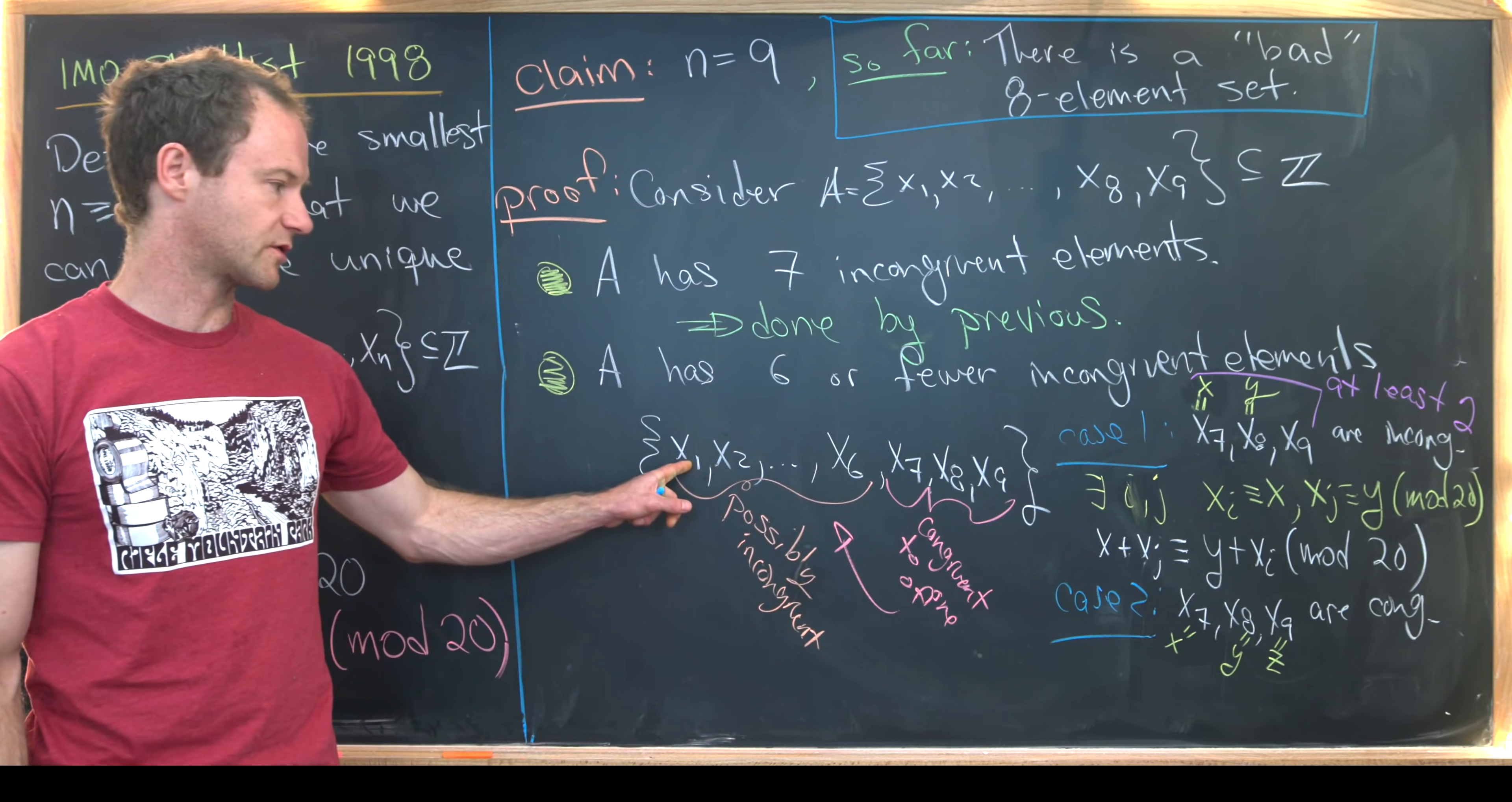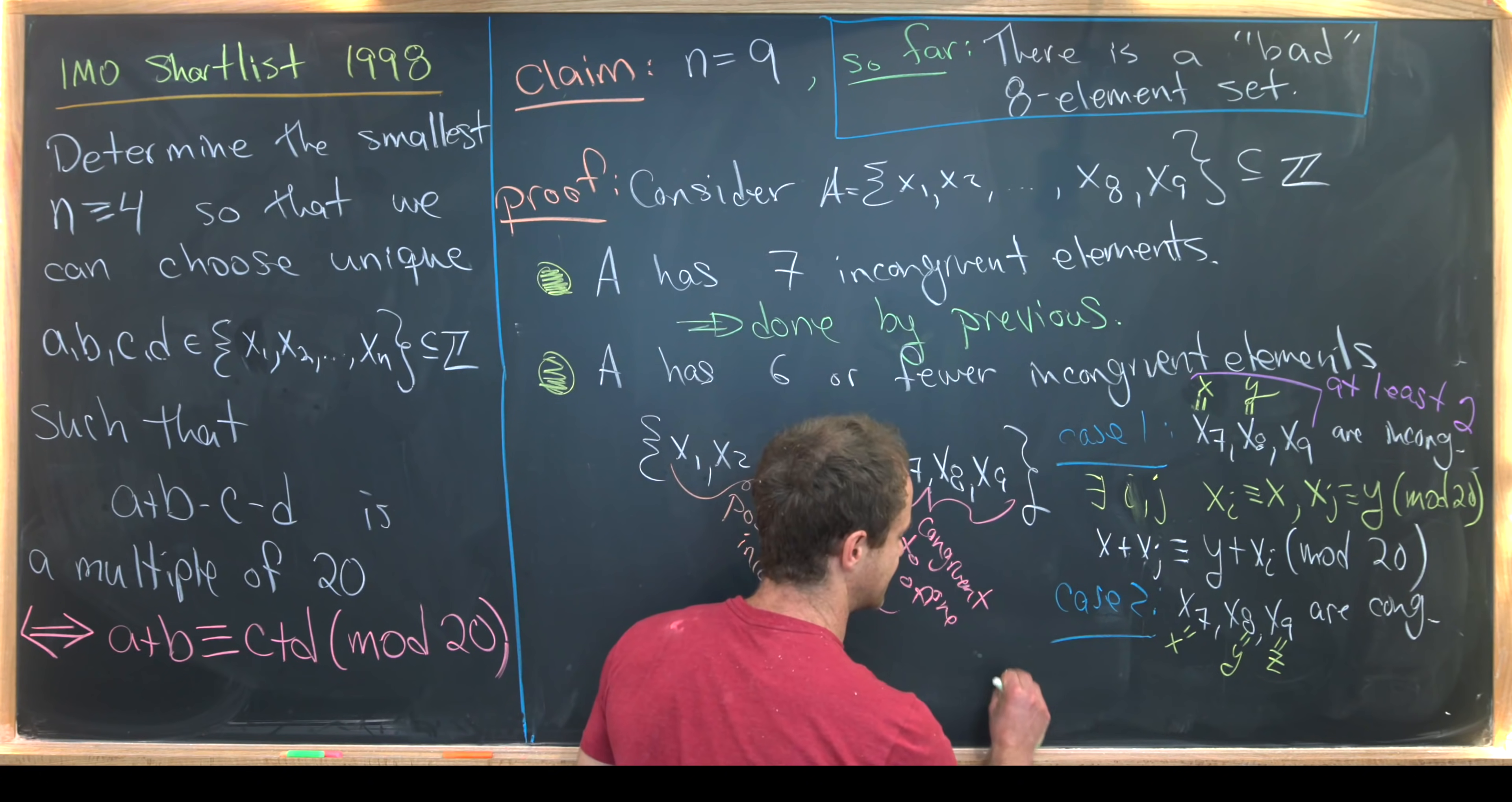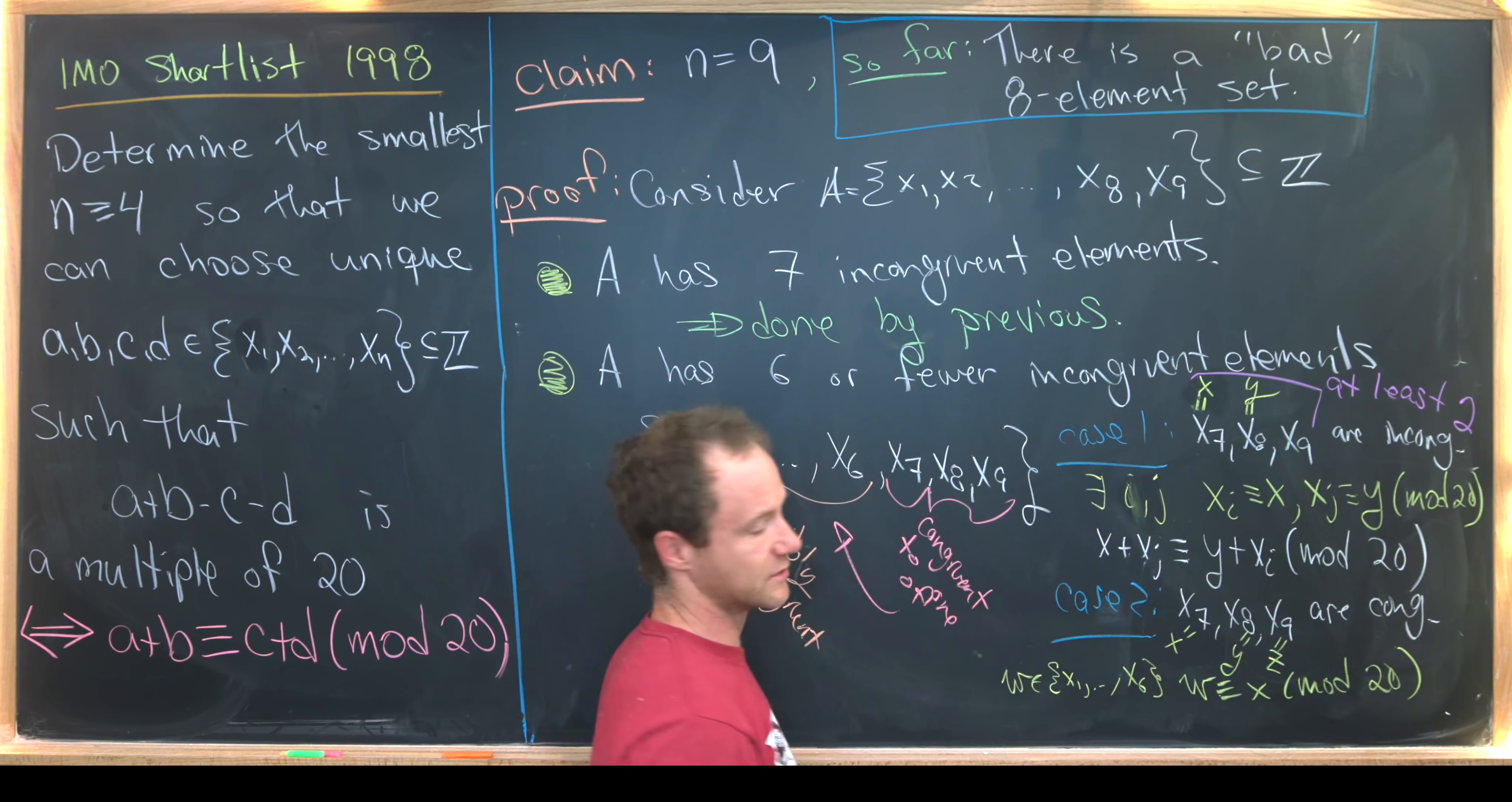But by our earlier argument, they're congruent to something in here mod 20. So there's a w from the set of the first six, where w is congruent to x mod 20, which is also congruent to y and z mod 20.